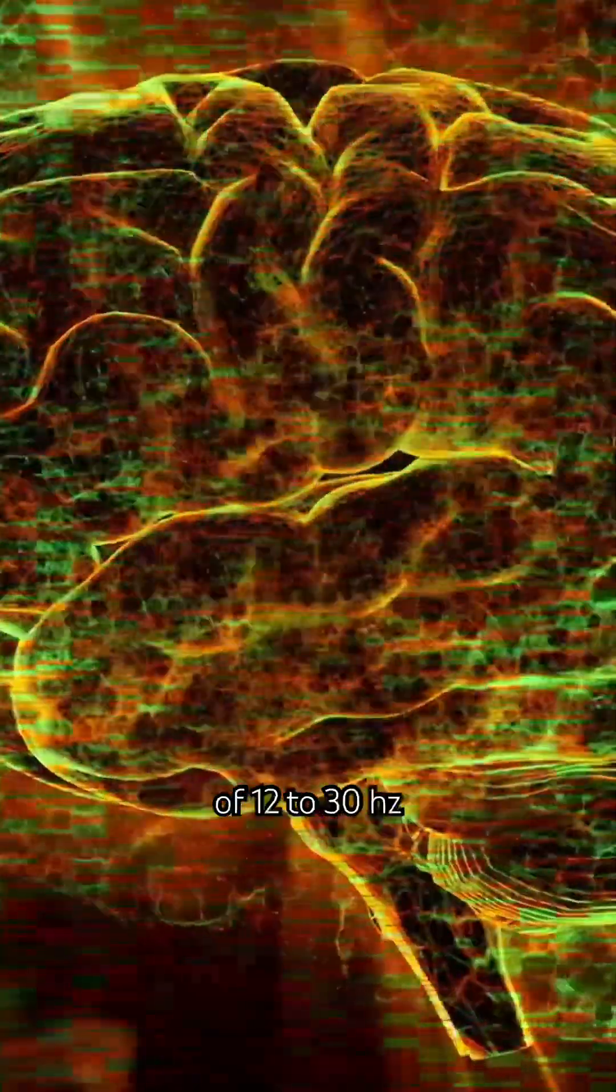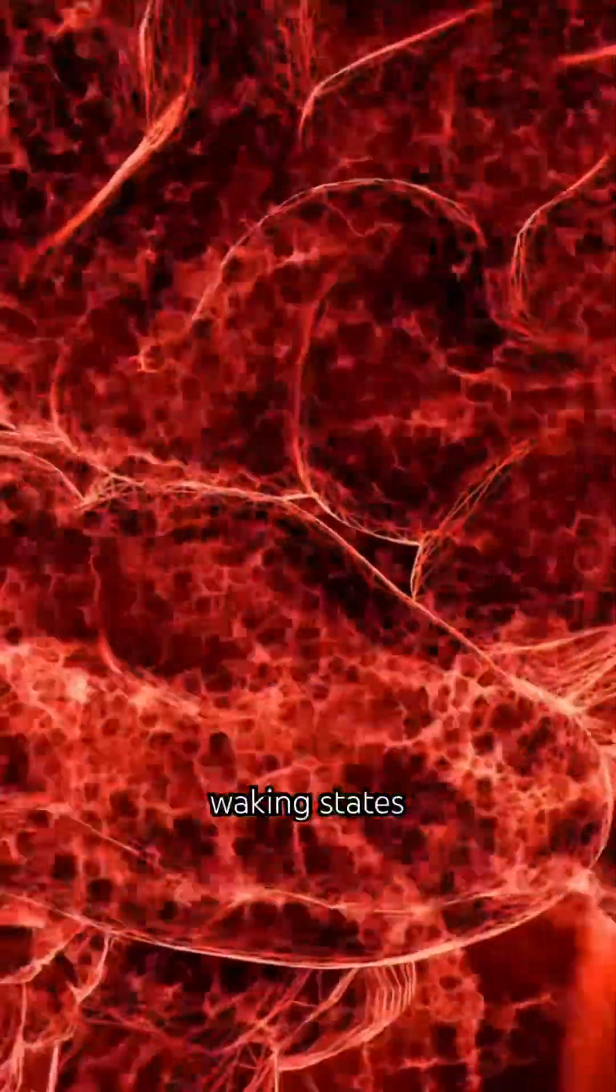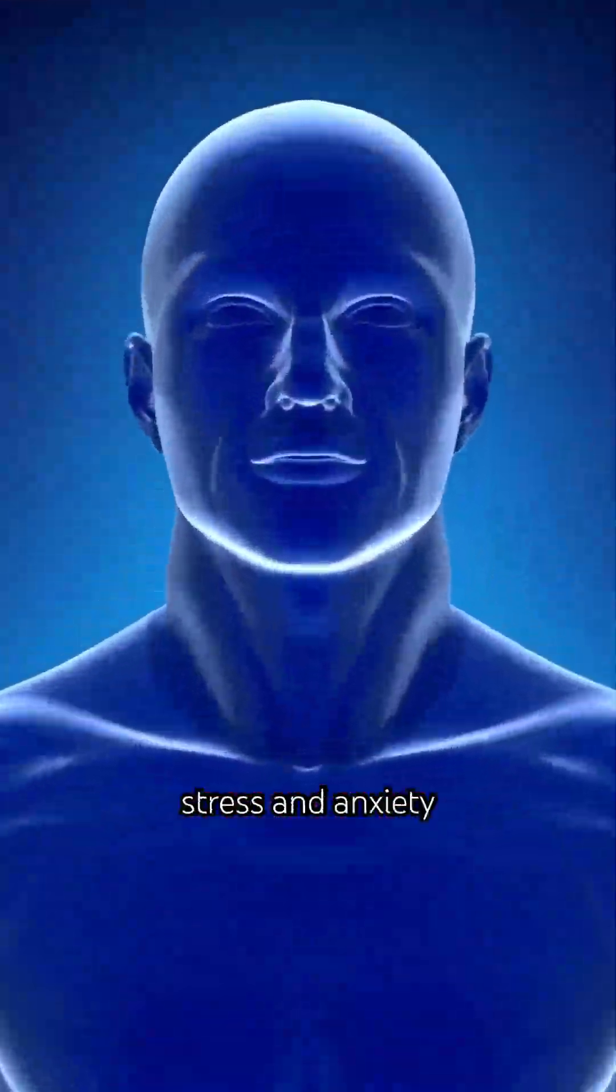Beta waves have a frequency of 12 to 30 hertz, and they are typically associated with an alert and active state of mind. They are present during normal waking states and are also associated with stress and anxiety.